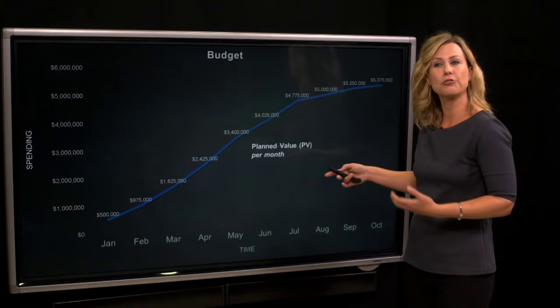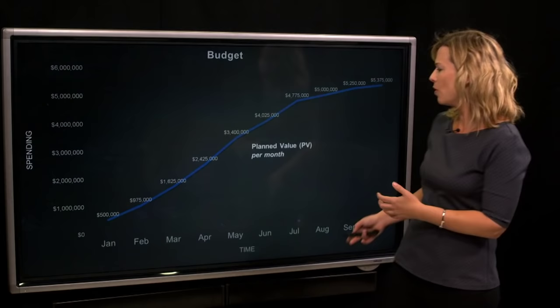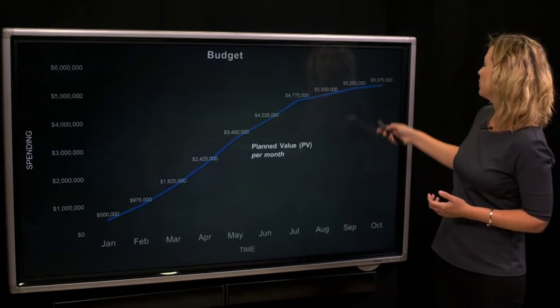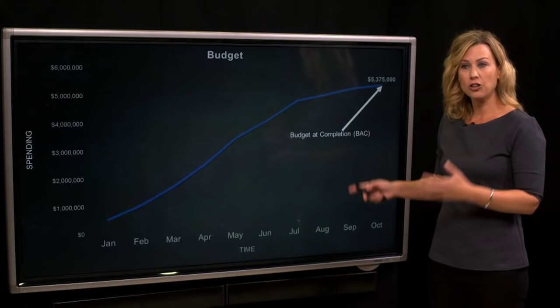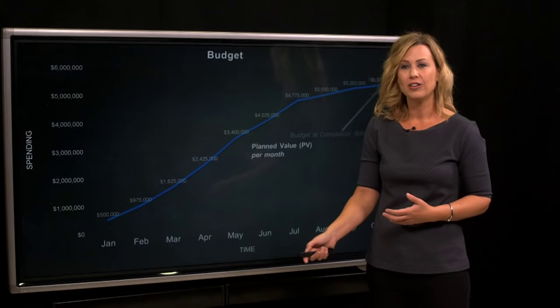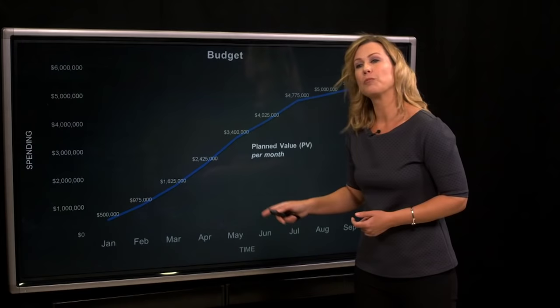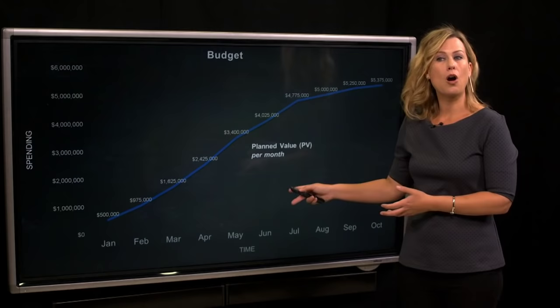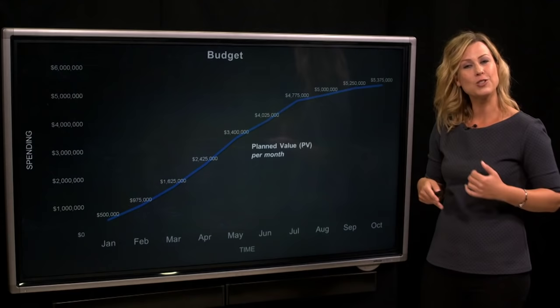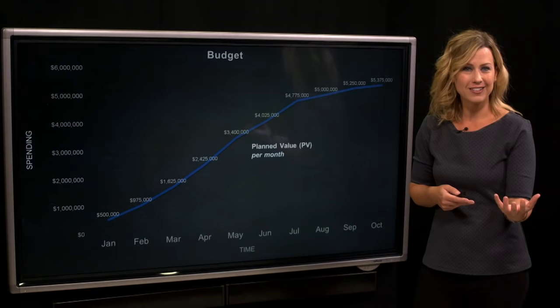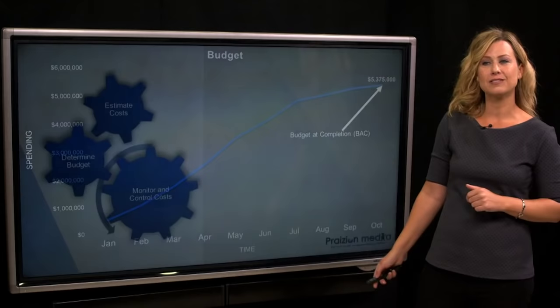This is the planned value in the earned value management world. Here we did it by month because it makes it easier to read and talk to people who don't know anything about your work packages. How much money are you going to spend in January? $500,000. How much money are you going to spend over the whole project? That's $5,375,000 — our budget at completion, our BAC. Each of these numbers is a cost estimate and does include risk reserves. Our contingency reserves are built into our budget at completion, and the project manager has the authority to pay for those identified risks.